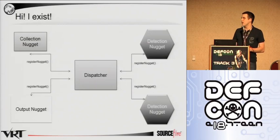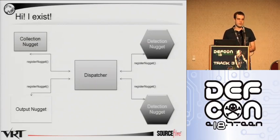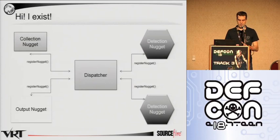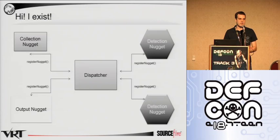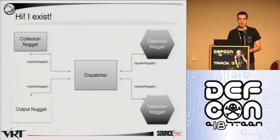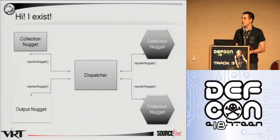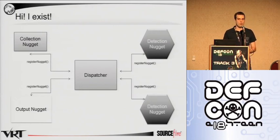So if you've got a detection nugget that comes online, it will have prior knowledge of where the dispatcher is, what its IP and port combination is. It will call register nugget, let it know what its IP and port are, what kind of data types it's able to handle, as well as the available number of running threads. That last piece is mostly just for load balancing reasons, but the dispatcher will keep track of all that in its own local routing table.